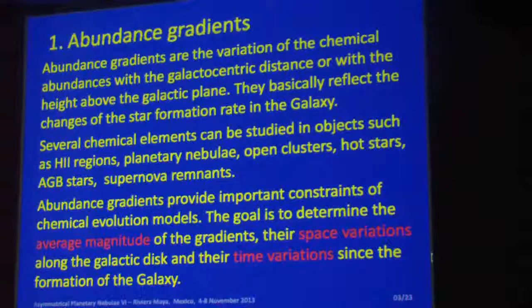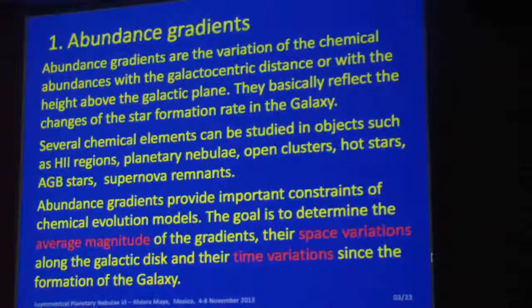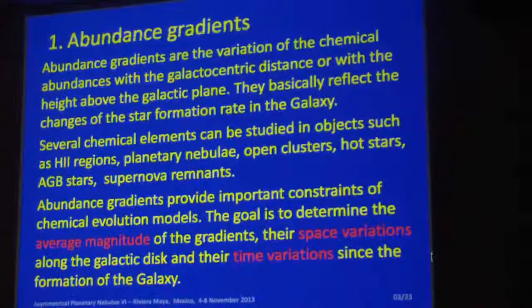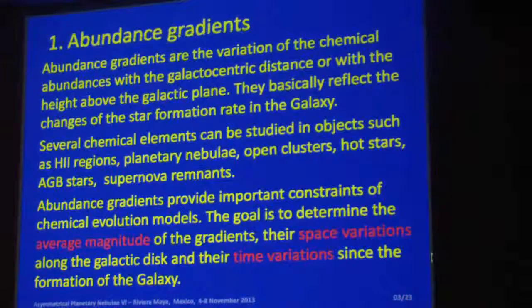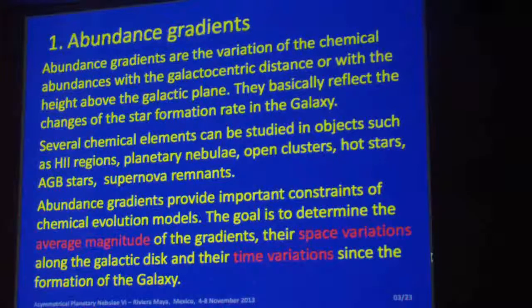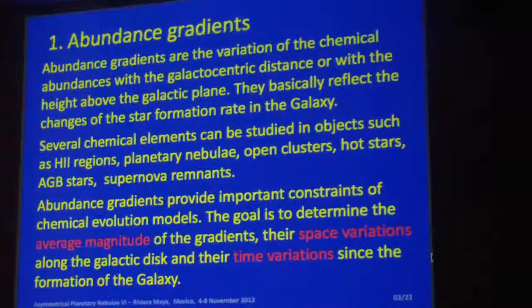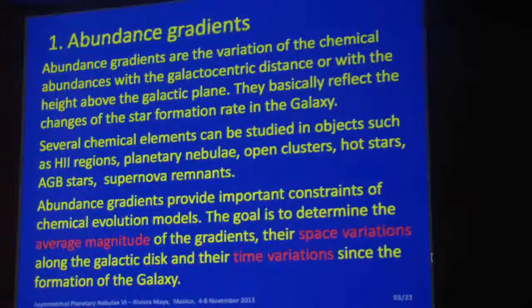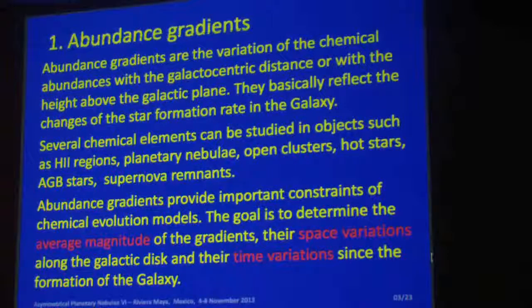Put very simply, abundance gradients are just the variation of abundance with galactocentric distance. If you have a galaxy like ours, you see differences in the abundances. We would like to know the average magnitude of gradients and also their space and time variations, and that is really important.